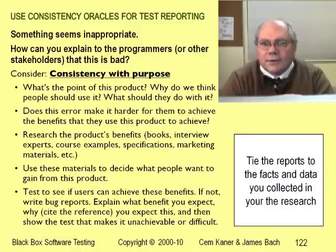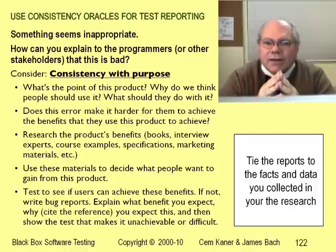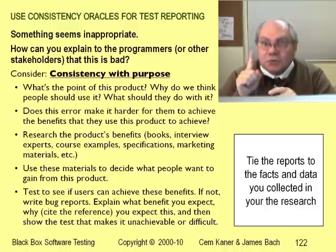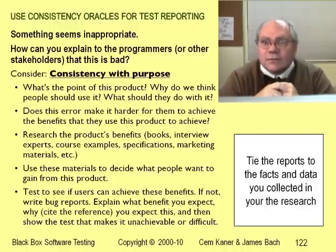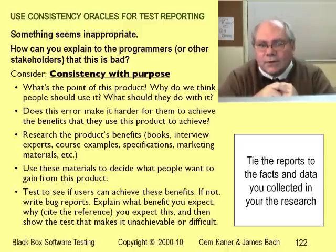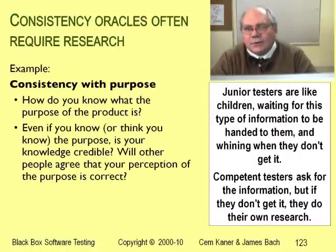Other comparisons aren't as clear-cut because the reference points aren't laid out clearly for you. For example, suppose a program makes it hard to do something — does that matter? You might have to decide why people would use this product. If the reason they buy the product is to be able to do a task and it's too hard, that's an inconsistency with their expectations. The consistency heuristics rely on your knowledge. You're often not going to get that knowledge from an easy-to-use source like a well-written specification. You're going to have to go get it for yourself.